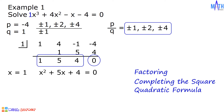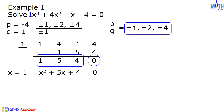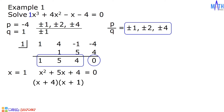In x squared plus 5x plus 4 equals 0, the value of a is equal to 1, b is equal to 5, and c is equal to 4. Since a is equal to 1, let us find factors of c, which is 4, that when added equal b, which is 5. The factors that we need are 4 and 1, since 4 plus 1 is equal to 5. The factors of x squared plus 5x plus 4 are (x plus 4) and (x plus 1). So we have (x plus 4)(x plus 1) equals 0.